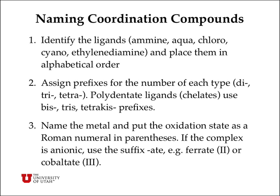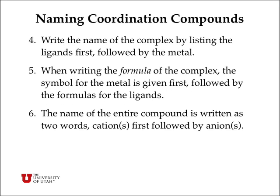Next, name the metal and put the oxidation state as a Roman numeral in parentheses. There is a special rule that if the complex itself is anionic, you use the suffix "-ate", like ferrate or cobaltate, to indicate that the complex is negatively charged. Write the name of the complex by listing the ligands first followed by the metal. When writing the formula of the complex, you write the metal first followed by the ligands. Name the entire compound as two words — the cation goes first and the anion goes last, regardless of whether the complex is cationic or anionic.